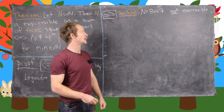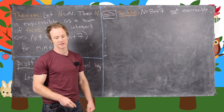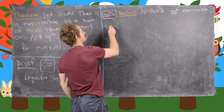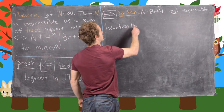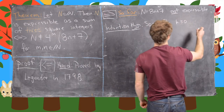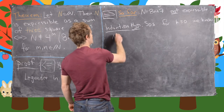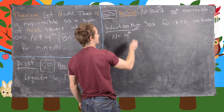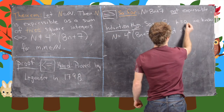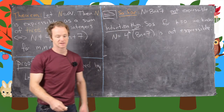At this point in the proof, we've shown that if n equals 8n + 7 then it is not expressible as a sum of 3 squares — that was the base case. Now we make the induction hypothesis: suppose for some k ≥ 0, we know that n = 4^k times (8n + 7) is not expressible as a sum of 3 squares.